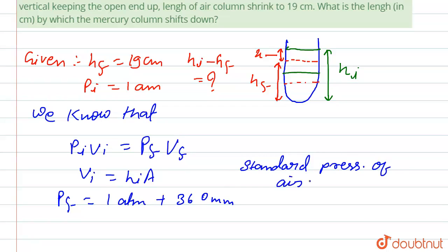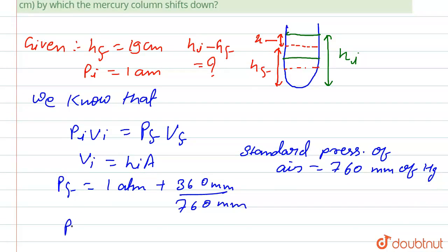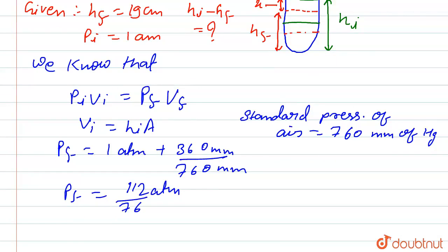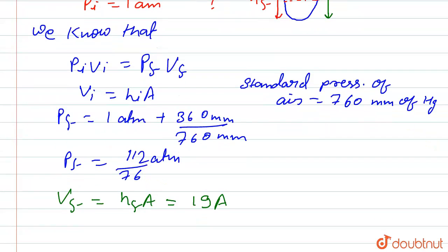We have to calculate V_f. V_f is equal to h_f into A. h_f is given that is 19A. So put the value in this equation.